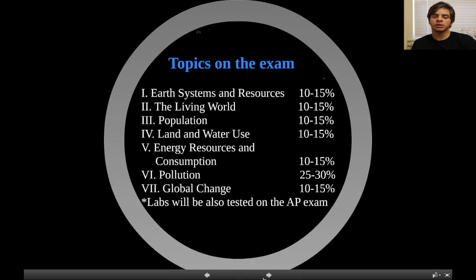We have earth systems and resources, about 10 to 15 percent; the living world, 10 to 15 percent; population; land and water use; energy; resources and consumption.